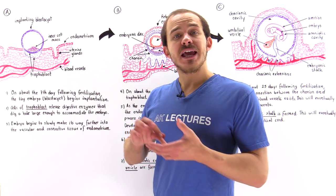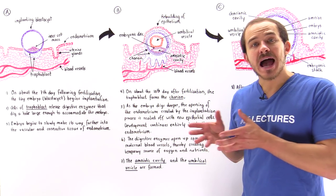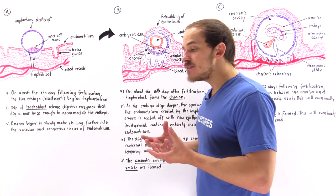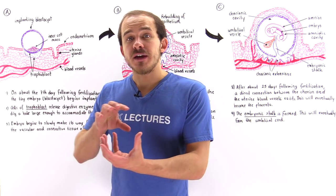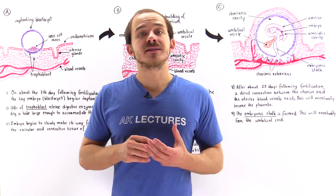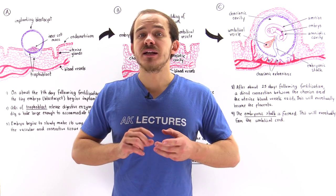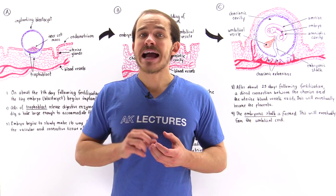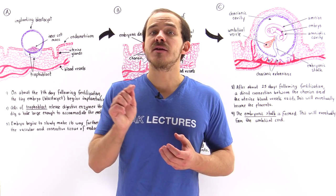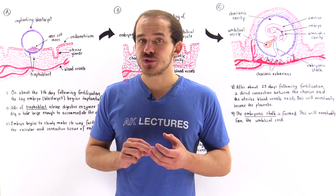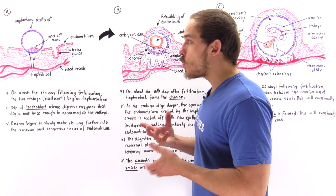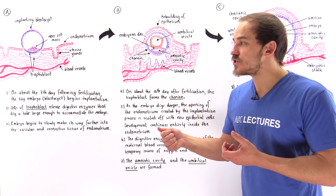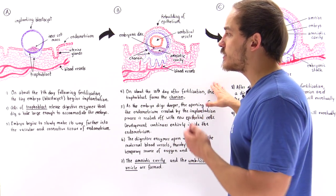The cells of the inner cell mass eventually give rise to the actual organism itself. Following the formation of the blastocyst, it finds itself inside the fluid in the cavity of the uterus. For the blastocyst to develop further, it must implant itself onto the endometrium, the lining of the uterus. In this lecture we are going to focus on this process of implantation and discuss how it takes place and what happens after implantation.